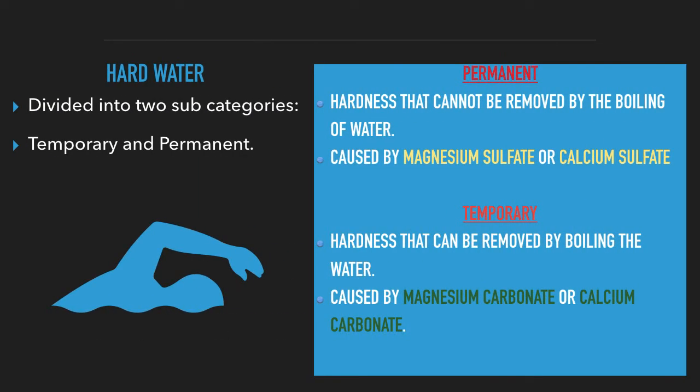Hard water is divided into two subcategories: temporary and permanent water. We will look at permanent water first. It is defined as hard water that cannot be softened by boiling — in other words, boiling does not remove hardness. Magnesium sulfate and calcium sulfate cause permanent water hardness. Temporary water hardness is hardness in water that can be removed by boiling. Magnesium carbonate and calcium carbonate cause temporary water hardness.